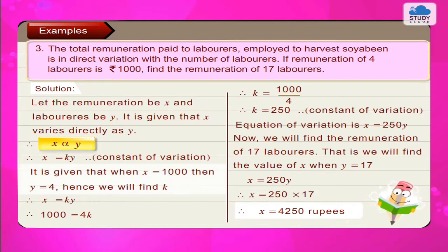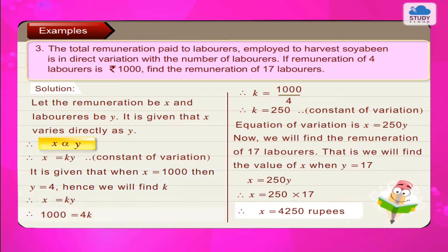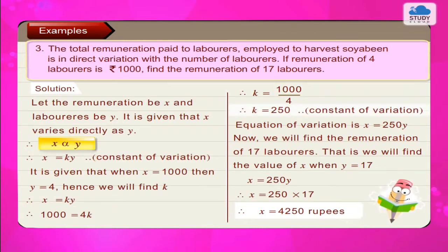It is given that when x = 1000, then y = 4. Hence we will find k. x = ky. Therefore 1000 = 4k. Therefore k = 1000 upon 4. Therefore k = 250, which is the constant of variation. Therefore the equation of variation is x = 250y.